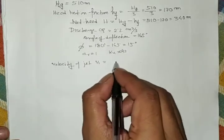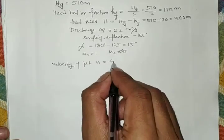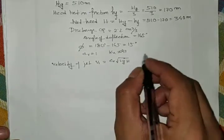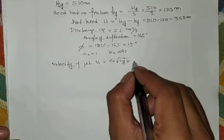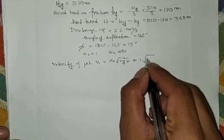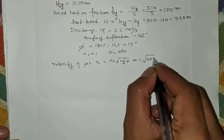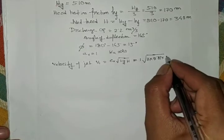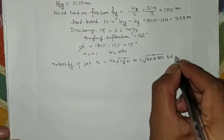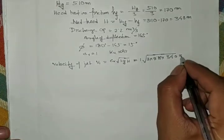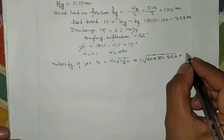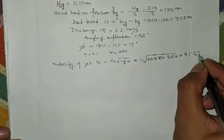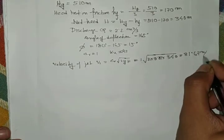Cv = 1 and Ku = 0.45. The velocity of the jet is V1 = Cv × √(2gH) = 1 × √(2 × 9.81 × 340) = 81.67 m/s.